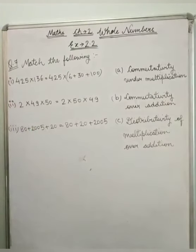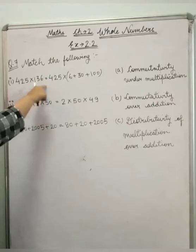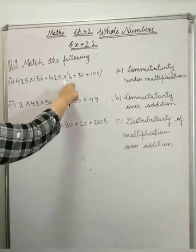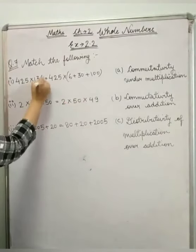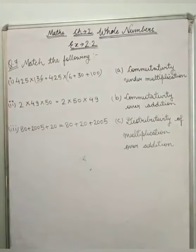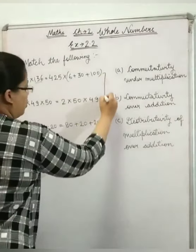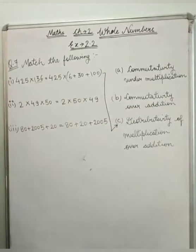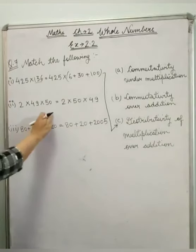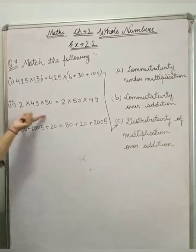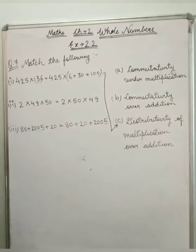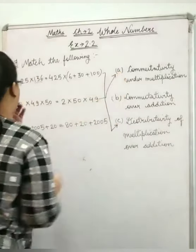So first is 425 multiply 136 equals 425 multiply (6 plus 30 plus 100), this is distributivity of multiplication over addition. Now, 2 into 49 into 50 equals 2 into 50 into 49, this is commutativity under multiplication.